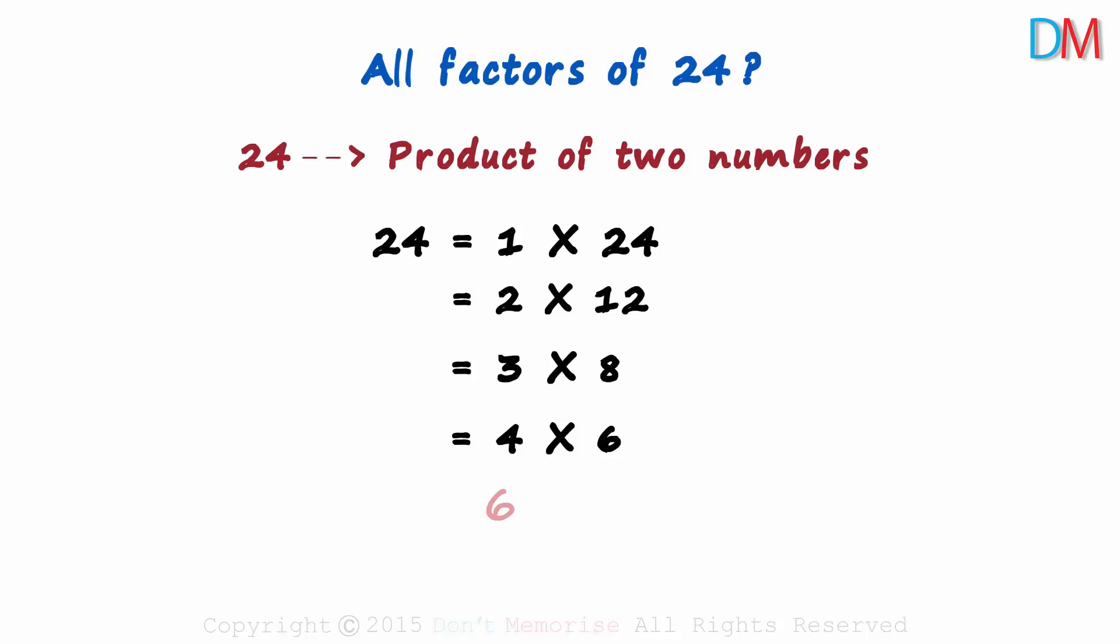And the next number is 6. But 6 onwards is already covered here. That's when we know that we have covered all possible products of two numbers. The numbers covered are in a U shape.